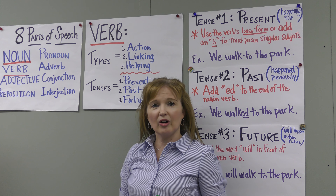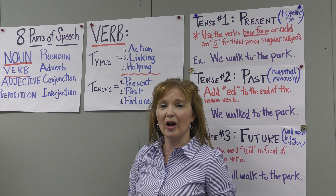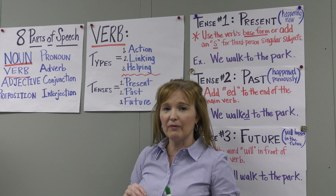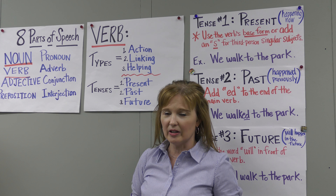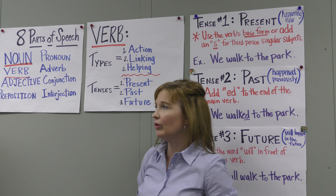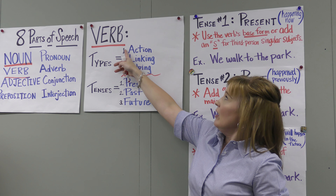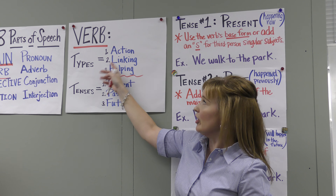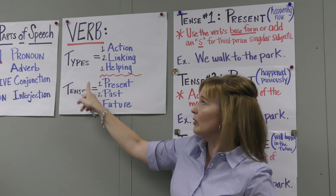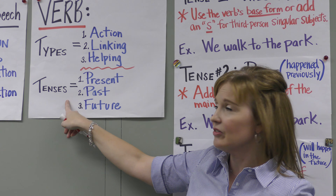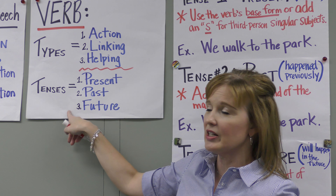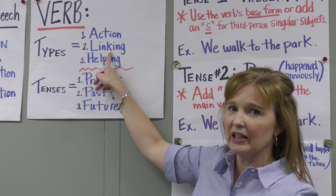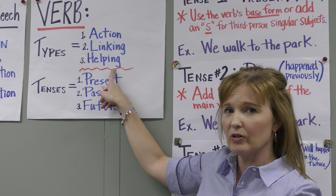English can be a complicated language. There are actually 12 different verb tenses and many different kinds of verbs, but I'm focusing just on the basics. If you have this basic understanding, it'll go a long way. So a verb is something that either shows action or link. Let's talk about types of verbs, and then we'll talk about a few tenses. Notice there are types and then there are tenses. So types of verbs are action, linking, and helping.